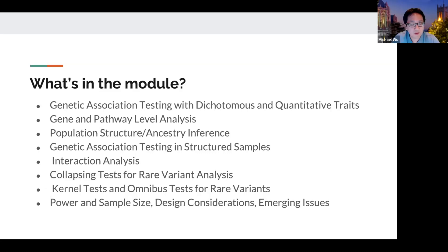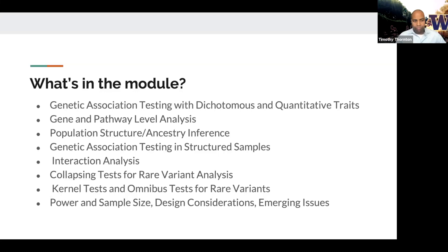Then we'll continue with a lecture on interaction analysis — by interaction, what we're talking about is effect modification, so gene-environment interactions and also gene-gene interactions, or epistasis. After that, we'll transition into the analysis of sequencing data. One major difference between GWAS and sequencing is the availability of rare genetic variants. For the next few lectures, we'll talk about different statistical tests and approaches for analyzing rare, low-frequency genetic variants — first collapsing tests, then kernel tests and omnibus tests for rare variants. We'll conclude by discussing power and sample size, design considerations, and other emerging issues in sequencing data analysis.